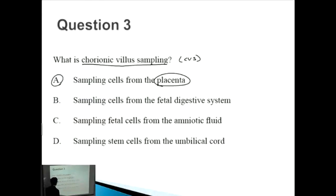Sampling cells from the fetal digestive system - this is not usually done, so it's a bit of a red herring. How about C, sampling cells from the amniotic fluid. This is actually done as well, usually done later than chorionic villus sampling, but it's called amniocentesis. This is the fluid that's around the baby, and you're taking the fluid that's around the baby and doing genetic tests on that. How about D, sampling stem cells from the umbilical cord. This is not usually done as well, but it can be done in certain cases if the baby is particularly ill. But just know that chorionic villus sampling is taking cells from the placenta. So it's not actually taking it from the baby itself. It's from the structure that's just next to it or adjacent to it.